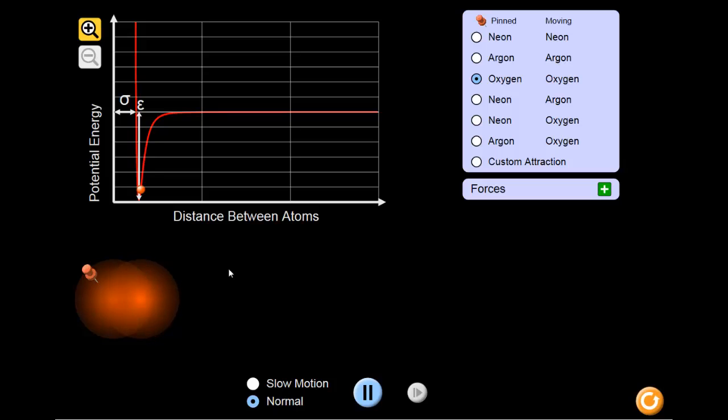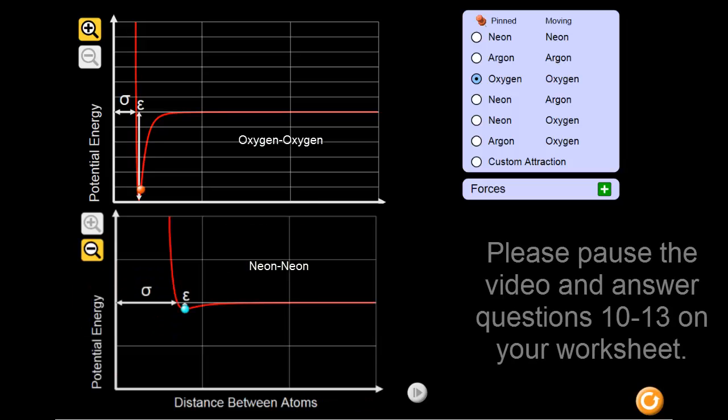Take a moment to pause the video and make note of some other differences that can be seen on the graph of two oxygen atoms when compared to two neon atoms. Why might these differences make sense?